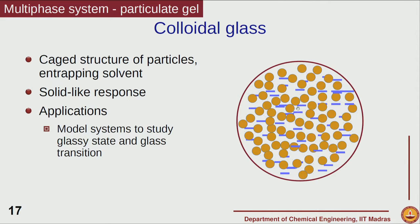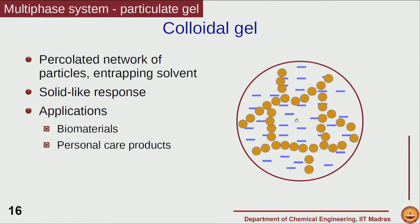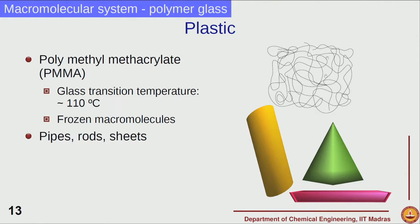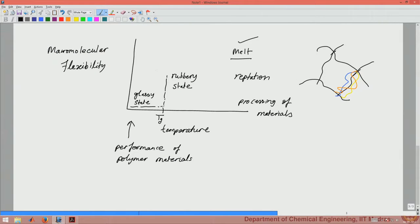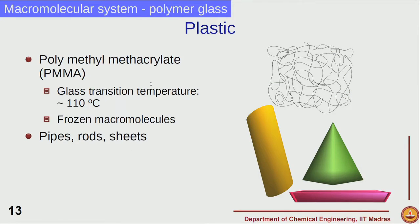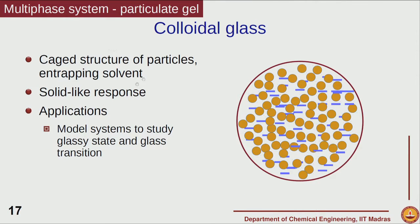The glass transition can happen by changing the interactions — under one condition particles are relatively mobile, and under some condition the particles become frozen. This situation is analogous to what happens with molecules as a function of temperature. In the case of macromolecules also, we have a glassy-to-rubbery transition where there is segmental mobility and then a glassy state where all motion is frozen. Similarly, in colloidal glass we go through such transitions, and the approach to glass transition can be investigated by manipulating the interactions.